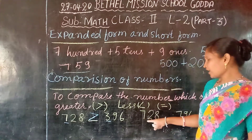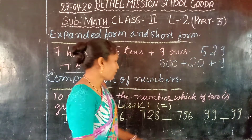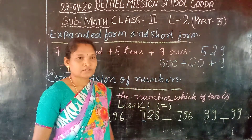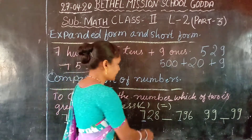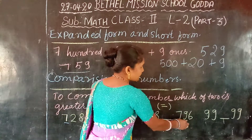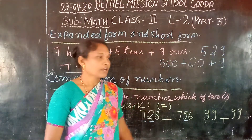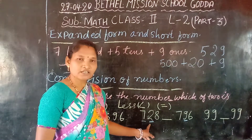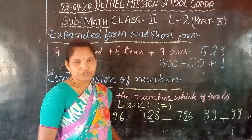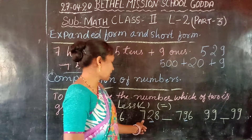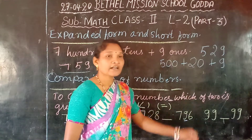Now the next one is seven hundred and twenty eight versus seven hundred and ninety six. Both the first digits are the same, so let us go to the second digit. Here it is two and here it is nine. Which number is greater — two or nine? Nine is greater than two. So seven hundred and twenty eight is less than seven hundred and ninety six.